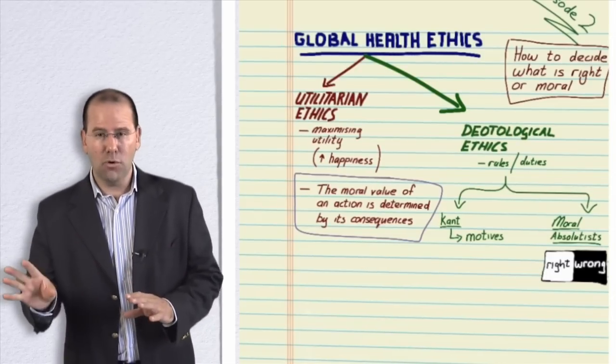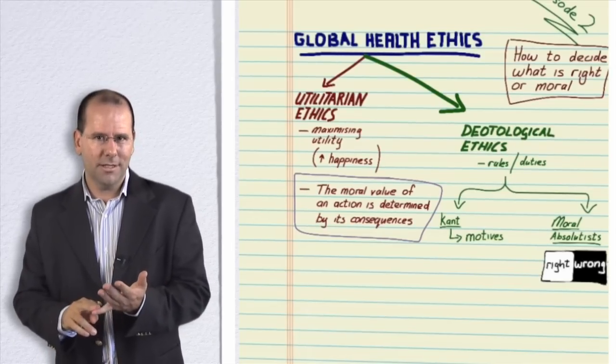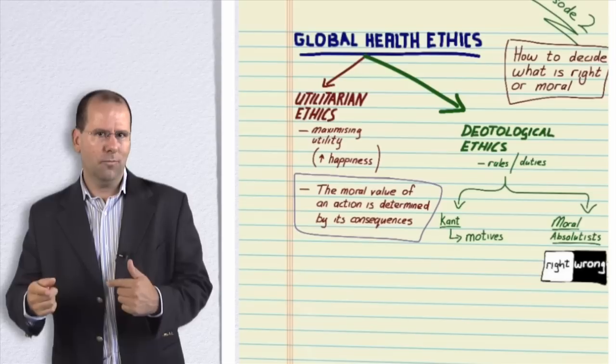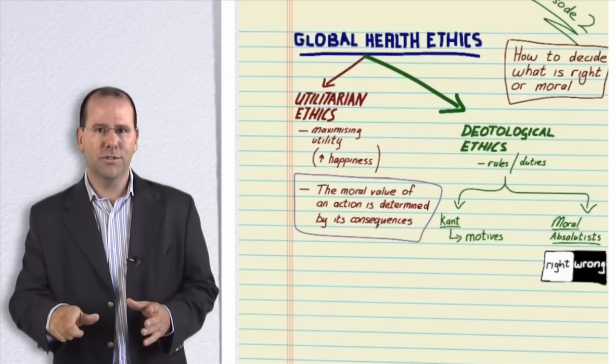So what we've got really, and there's many more, but what we've talked about is three frameworks for talking about ethics. The first is utilitarian ethics. So whether something's right or wrong as a function of whether it translates into the greatest good for the most number of people.